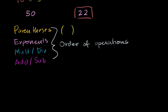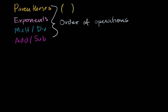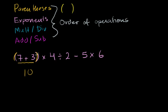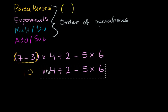Let's do another example to make things clearer. Say we have (7 plus 3) times 4 divided by 2 minus 5 times 6. There are all sorts of operations here, but if you follow the order of operations you'll simplify it cleanly. First, look for parentheses — there are parentheses around the 7 plus 3. So do that first: 7 plus 3 is 10. The expression simplifies to 10 times 4 divided by 2 minus 5 times 6.